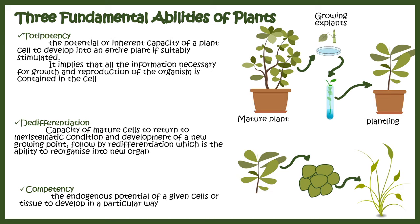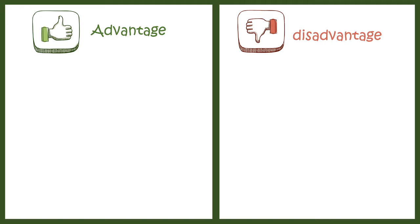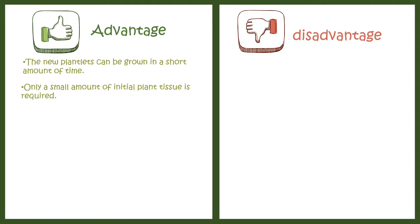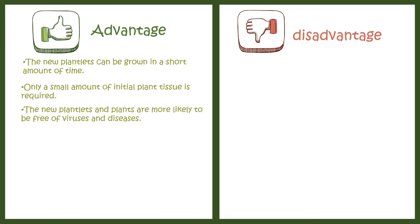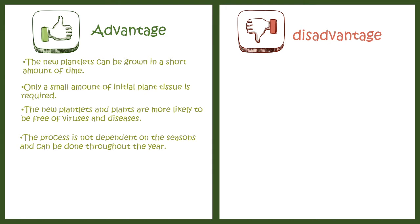The advantages of plant tissue culture include: new plantlets can be grown in a very short amount of time, bypassing the long time to produce a plant in a field. Only a small amount of plant material is required — a small portion of a leaf or meristem is sufficient to grow an entire plant. New plantlets are more likely to be free of viruses or diseases, which is important for production of virus-free or pathogen-free plants.